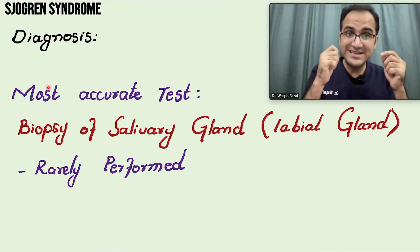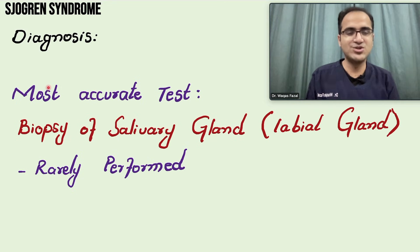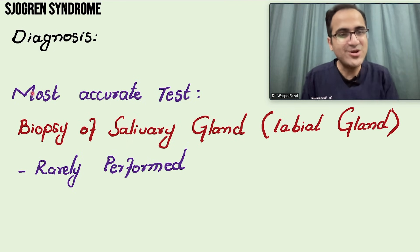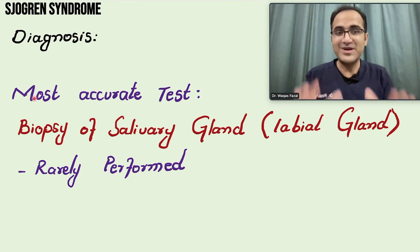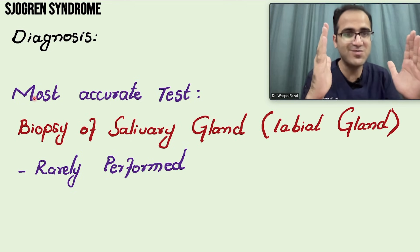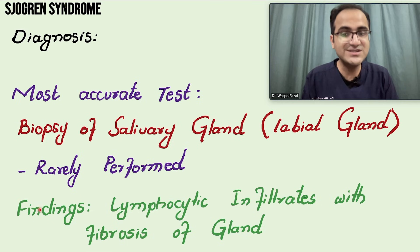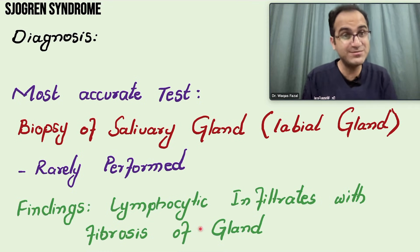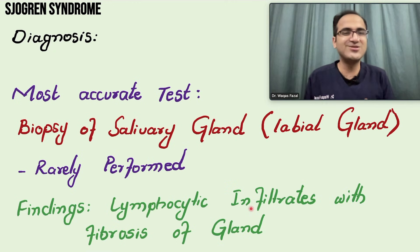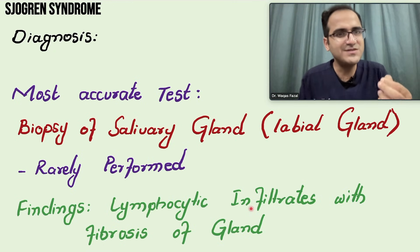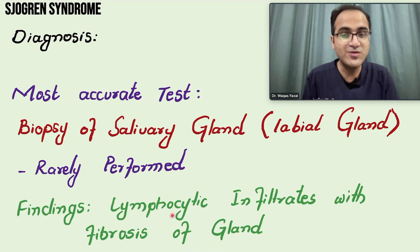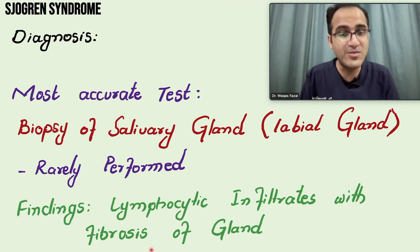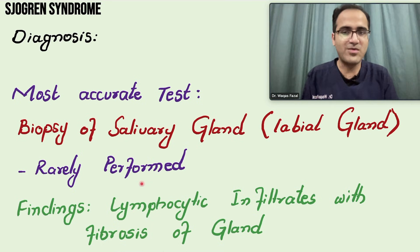If exams ask what is the most accurate test, it is biopsy of the labial gland. Although it is rarely performed in real life, the most accurate test is biopsy — not the antibodies. On biopsy you see lymphocytic infiltrates with fibrosis of the glands. This histological finding is tested in exams many times: in a scenario of dry eyes and dry mouth with a labial biopsy, the answer is lymphocytic infiltrates. In real life, we diagnose patients with clinical manifestations supported by antibody tests.